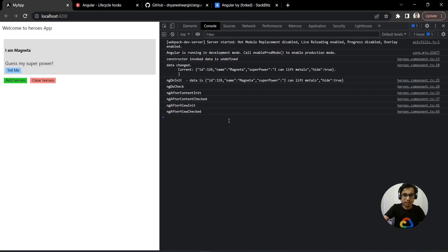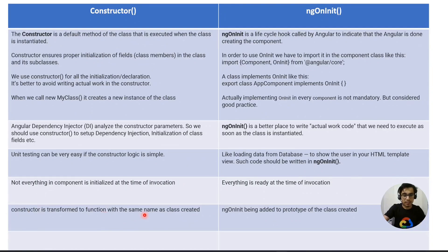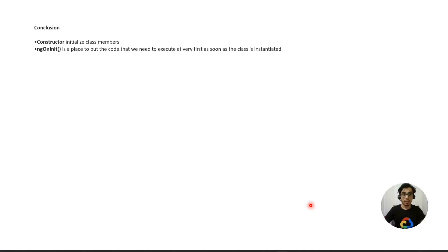So if you try to access data passed through the @Input decorator, you don't have access to it in the constructor. The constructor is transformed to a JavaScript function with the same name as the class, while ngOnInit is added as a prototype method of the class. Angular TypeScript code is transpiled to JavaScript — the constructor becomes a JavaScript constructor, while ngOnInit after compilation is created as a custom method assigned to the prototype.